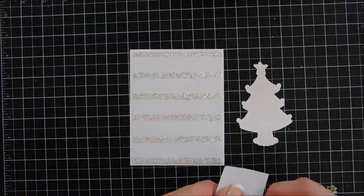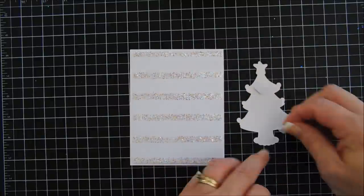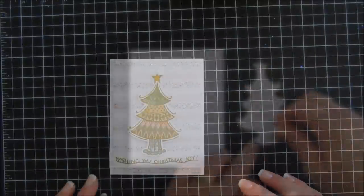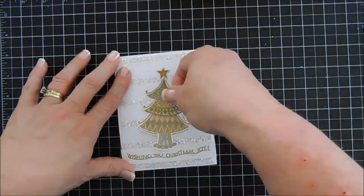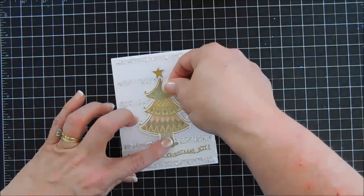I'm going to flip over my Christmas tree. We're going to add foam adhesive behind it. And then we're going to go ahead and add the sentiment, which I trim down again. And then I'm going to add my tree, which is kind of off-centered. We've got to fix that.